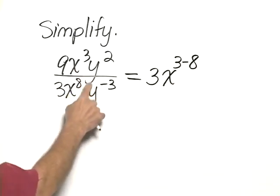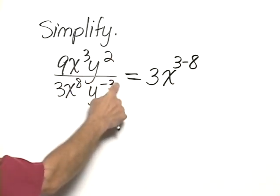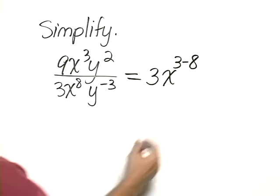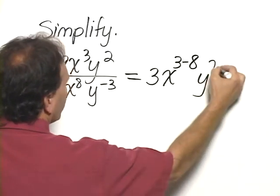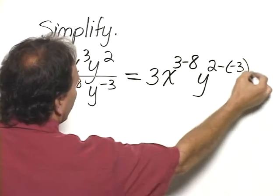For y, we also are going to subtract those exponents. So it would be y raised to the 2 minus a negative 3.